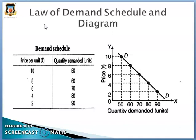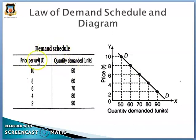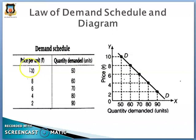We will express that relationship with the help of a table and diagram. To express the law of demand with the help of a demand schedule, we have two columns. The first column shows price per unit in rupees, and the second column shows quantity demanded in units.